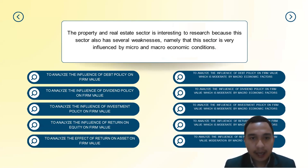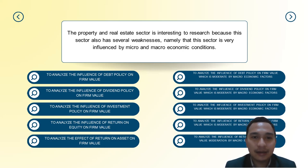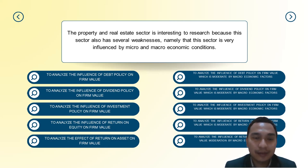The property and real estate sector is very interesting to research because the sector has several weaknesses — namely that it is very influenced by macro and micro economic conditions. The property and real estate condition serves as an alert of a country's macroeconomic condition. As we know, in the Indonesia Stock Exchange there are listed maybe 11 sectors. Why do we choose property and real estate as our sample in this research?